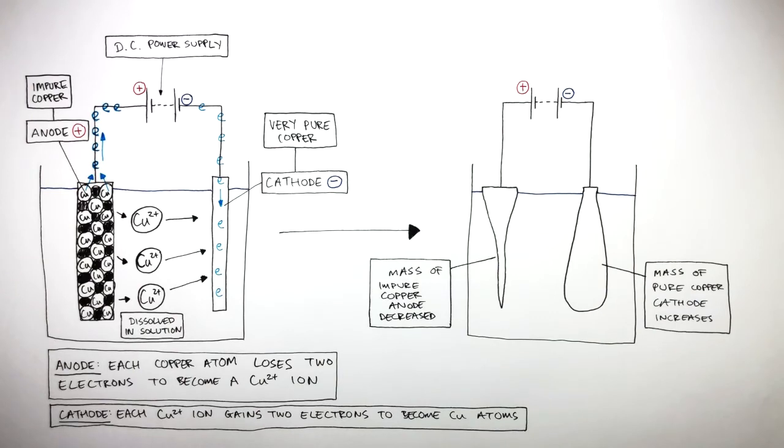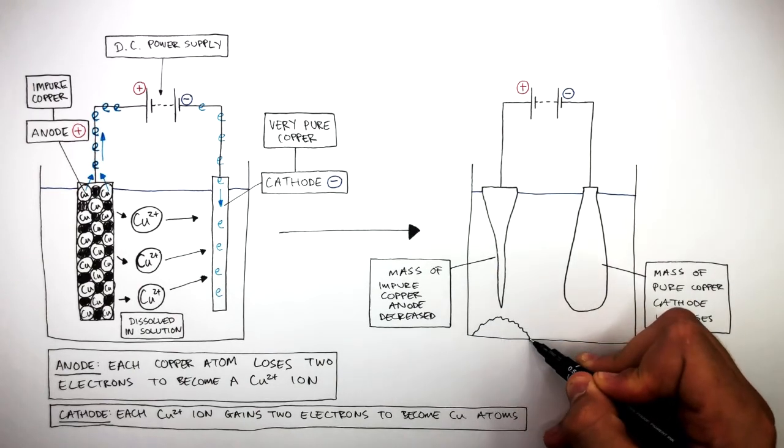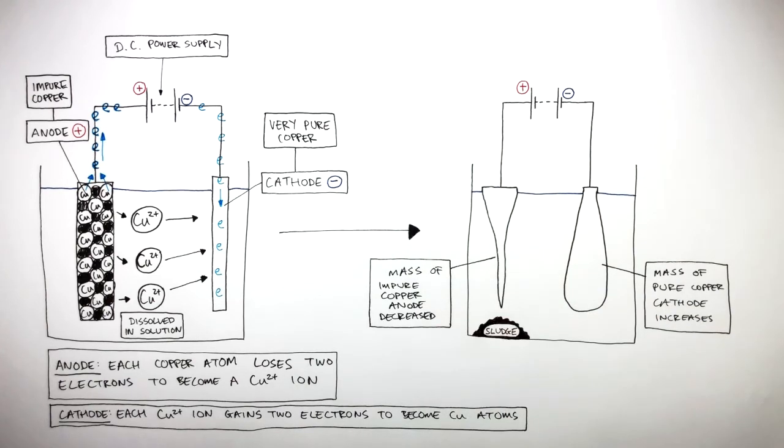Underneath the impure copper anode, a sludge forms. This sludge contains impurities and precious metals that were originally in the copper ore.